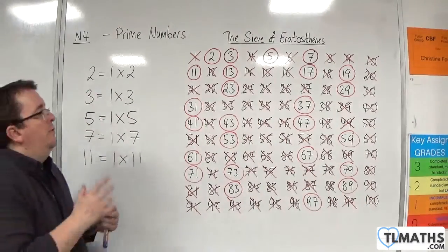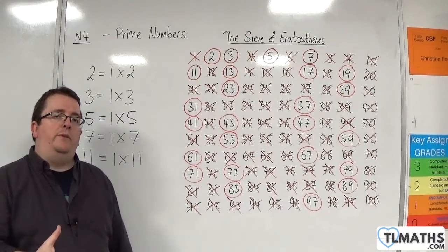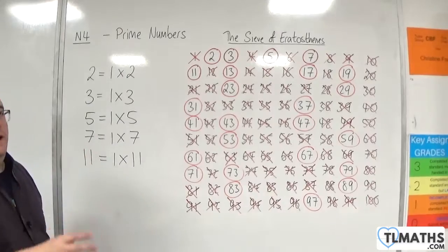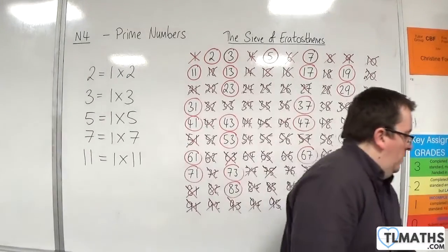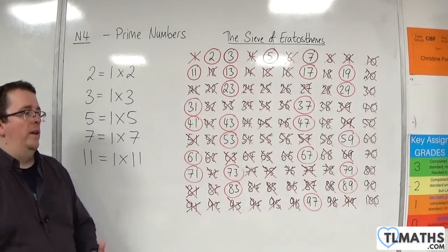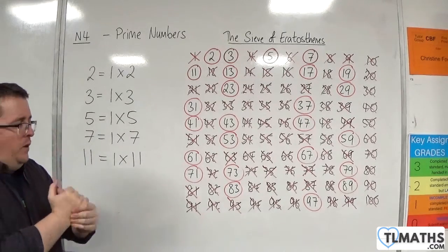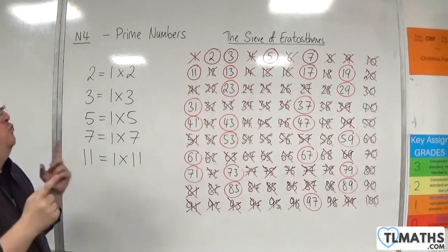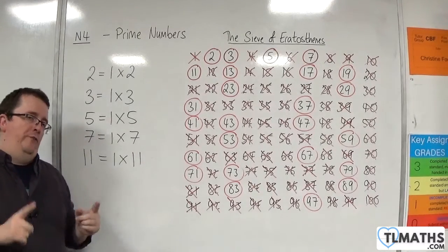So these circled numbers, these are the prime numbers between one and one hundred. Now do I expect you to know all of the prime numbers between one and one hundred? No.